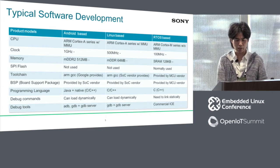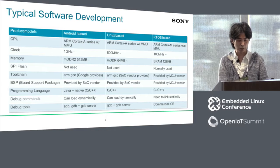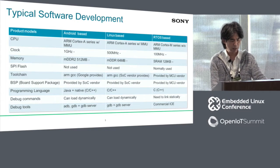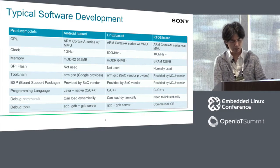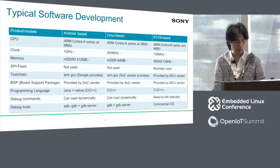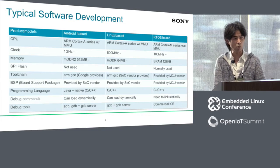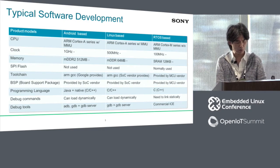This table shows typical software development. I divided product models into three categories. Perhaps most of you know Android or Linux-based development — this model has rich hardware such as Cortex-A series and much larger memory capacity. Usually we can use open-source-based development tools such as GCC, GDB, and ADB, which are used for actual software development.